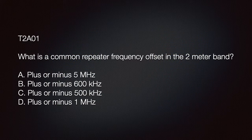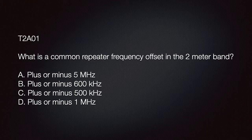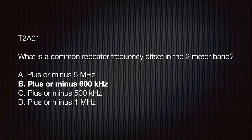On the exam you might see this: What is a common repeater frequency offset for the two meter band? A: plus or minus 5 megahertz; B: plus or minus 600 kilohertz; C: plus or minus 500 kilohertz; or D: plus or minus 1 megahertz. The answer is B, plus or minus 600 kilohertz.